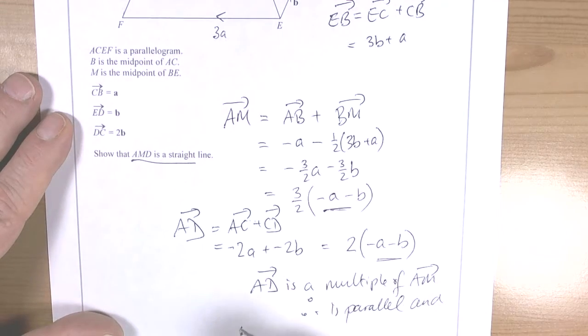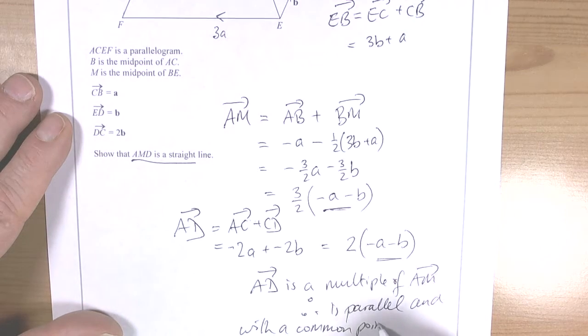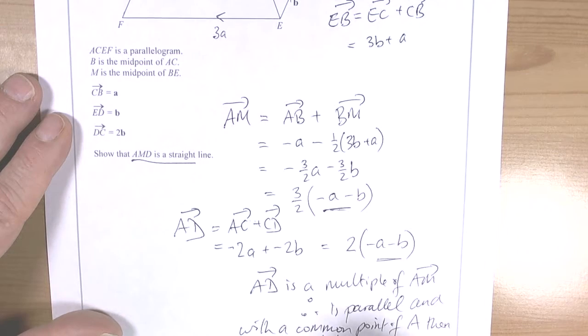And with a common point of A, then AMD must be a straight line.